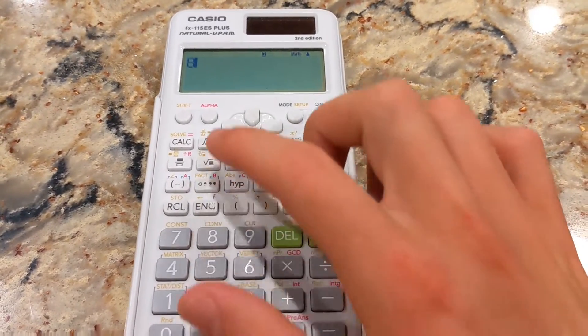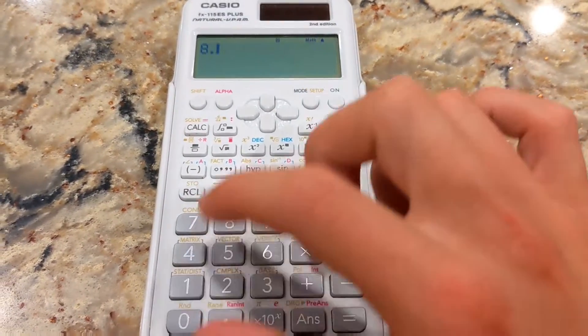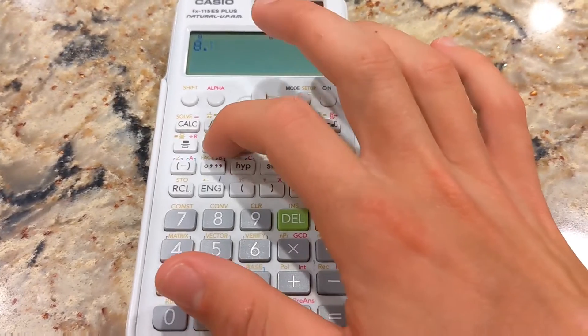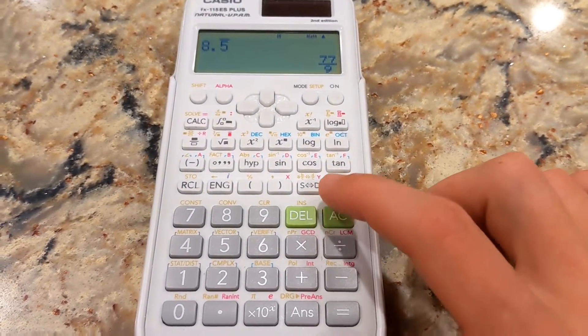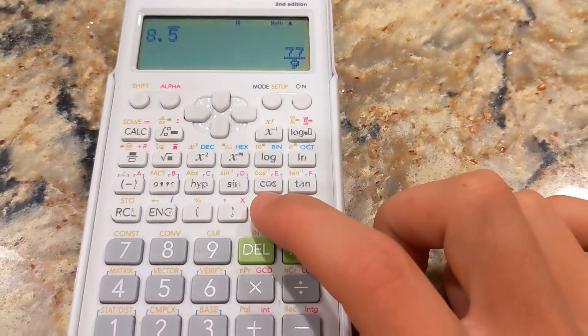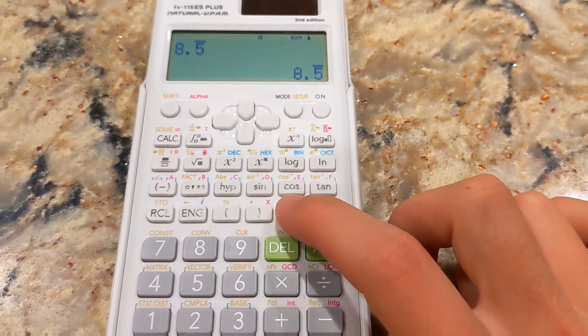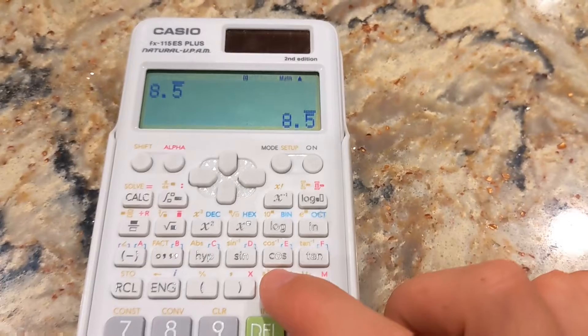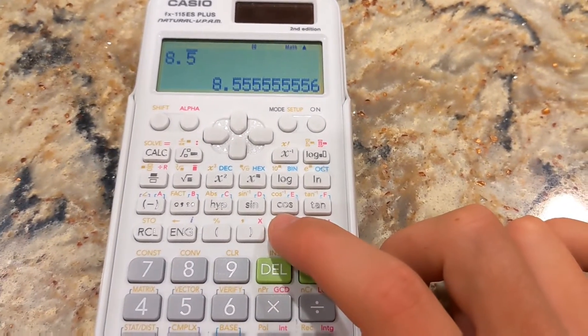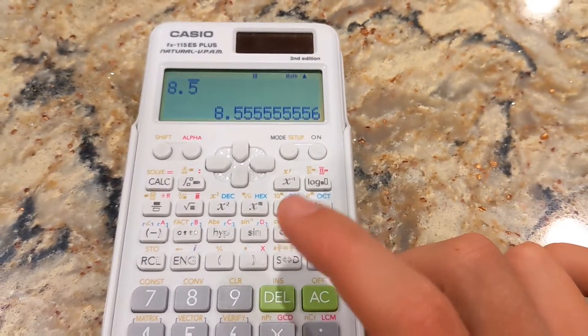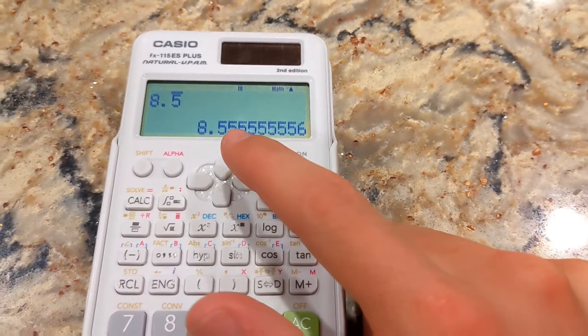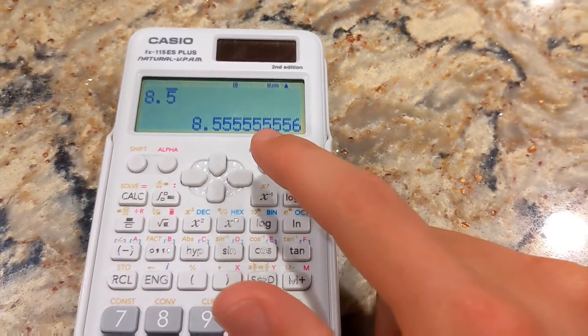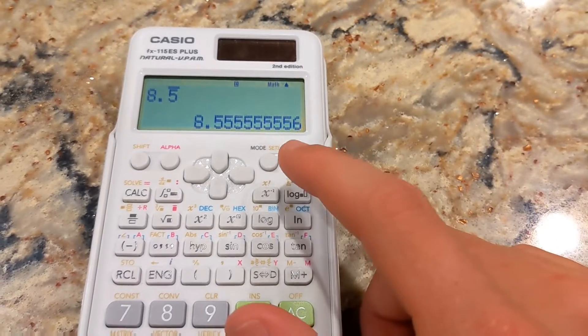Another thing is you could do repeating decimal on this thing. So maybe 8 repeating 5 equals, and then I got the fraction improper, 8, 5 repeating. And then if I hit it again, I get the entire number. It goes up to 10 digits.